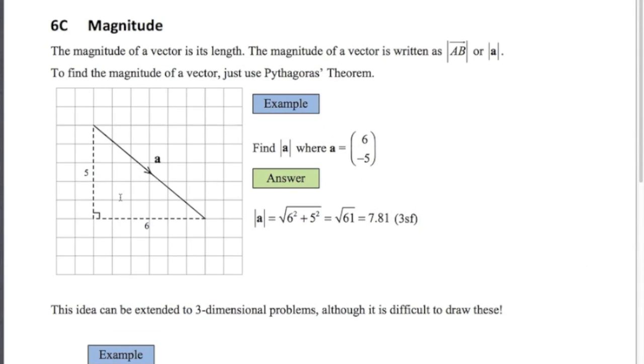In this video we're going to be looking at the magnitude of vectors. So magnitude is just the length. Pretty easy, just using Pythagoras' theorem in two dimensions to find the length of a two-dimensional vector.